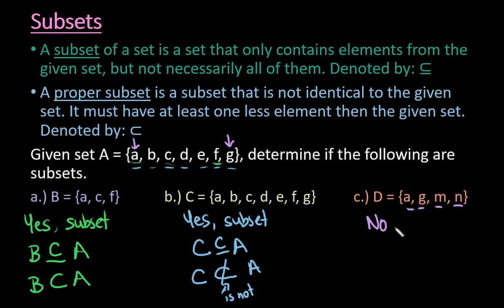You can write this symbolically that D is not a subset of A, or you could say that it's also not a proper subset. In order to be a subset, it has to have the same elements and it can't have extra ones.